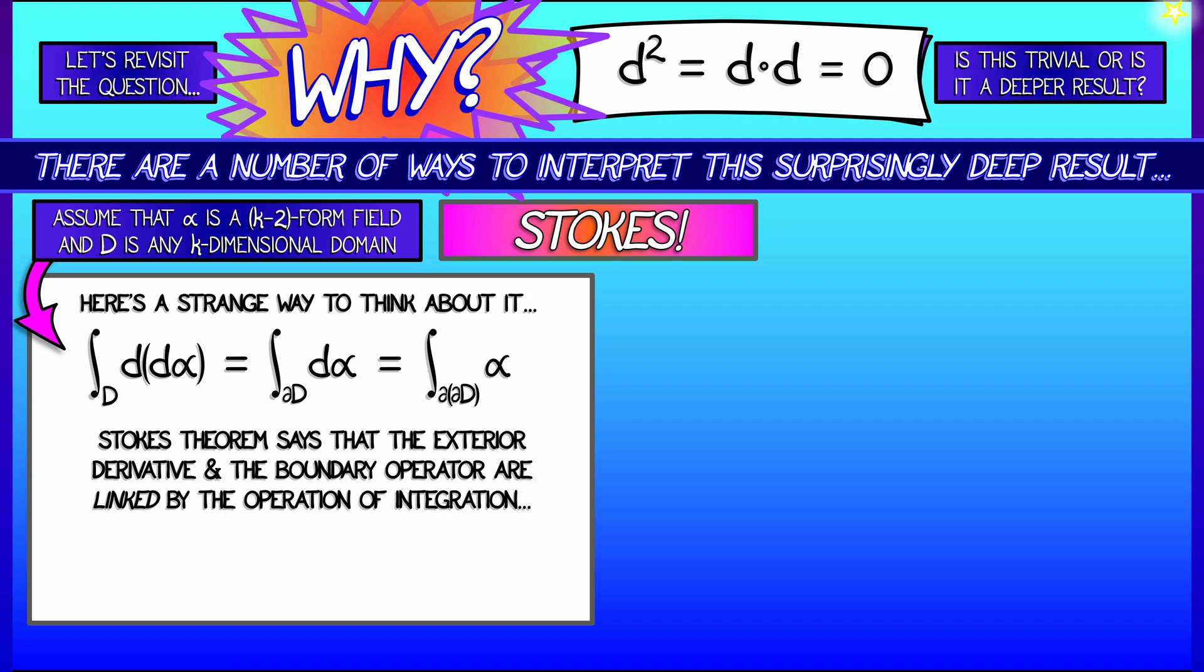They're tied together by this operation of integration. And so the idea that d squared equals zero is really connected to the idea that the boundary of a boundary is zero, is empty, is something that vanishes.